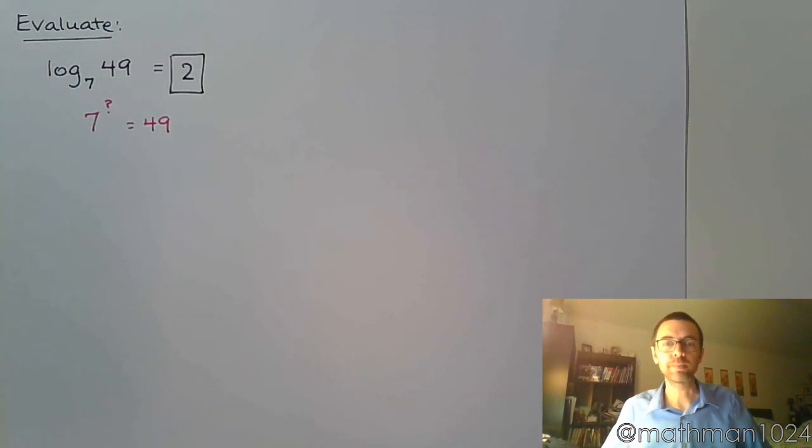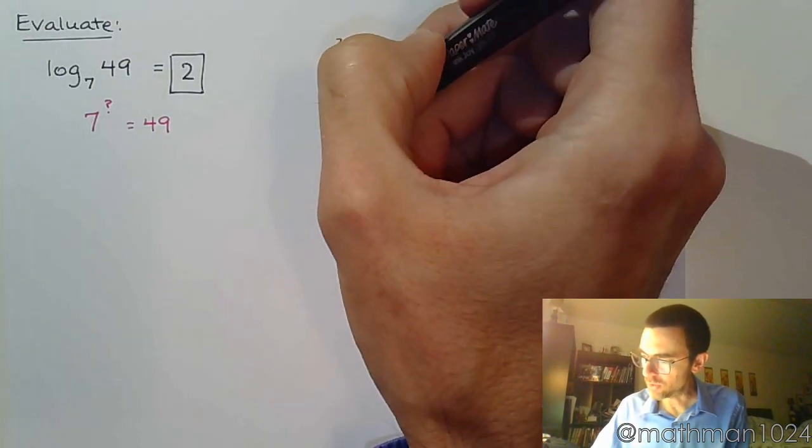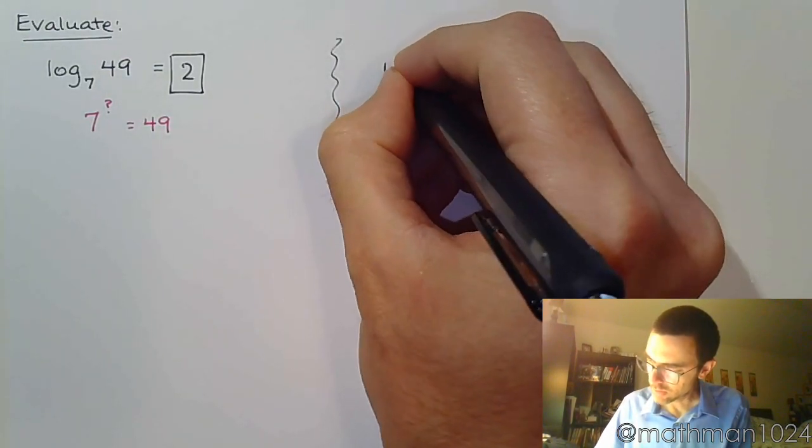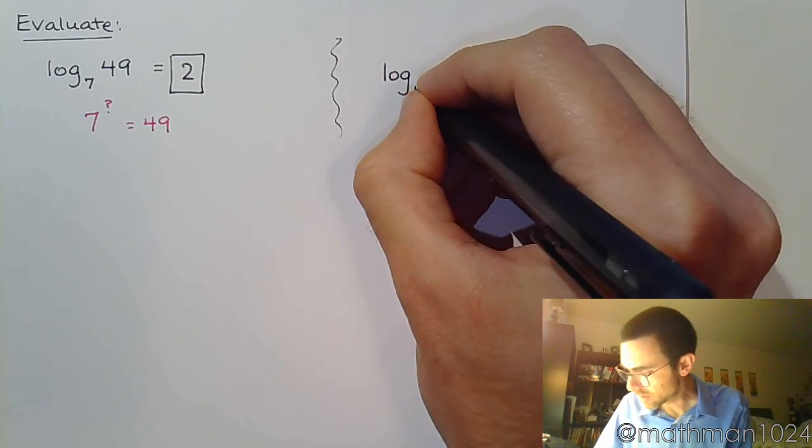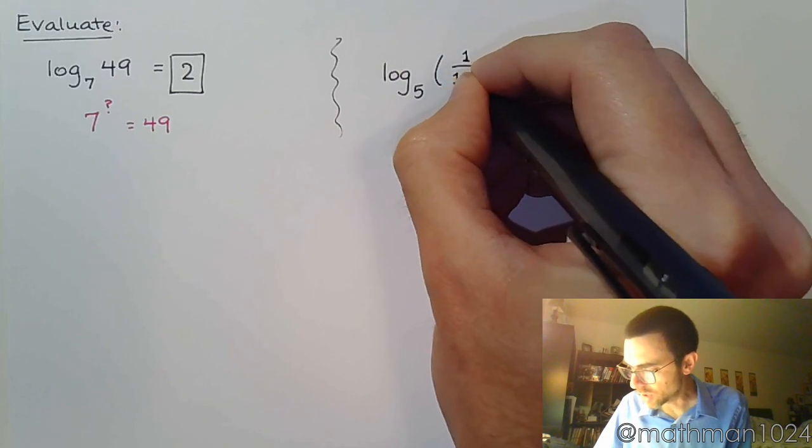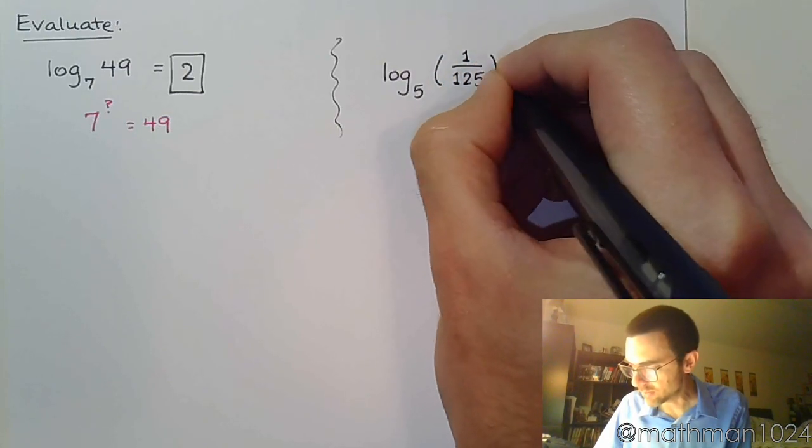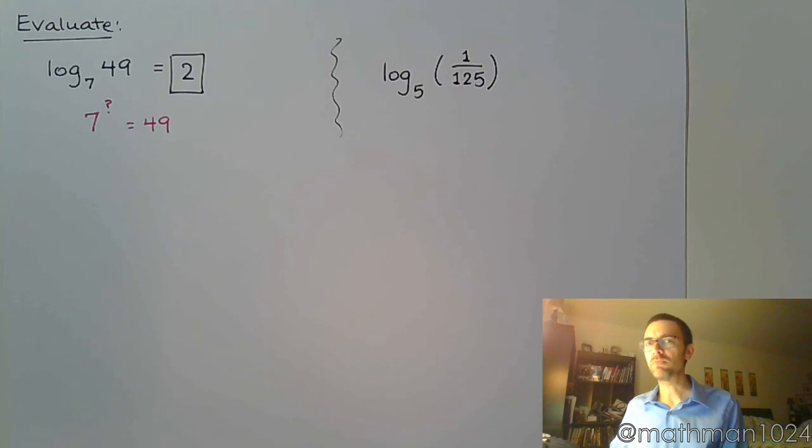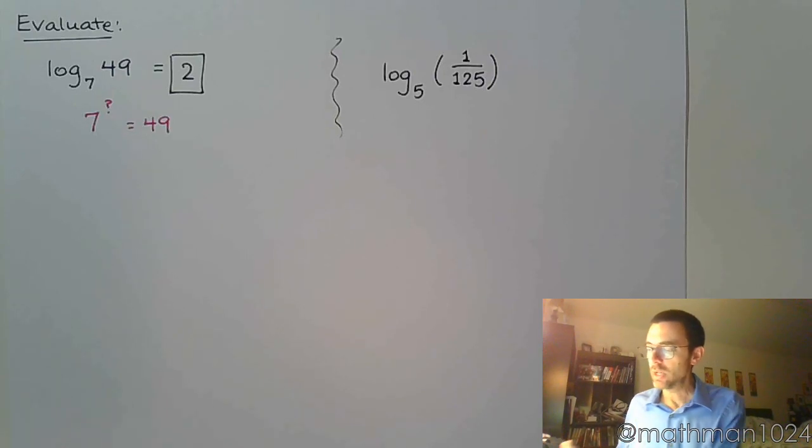That's all there is to it. If I ask you, what is log base 5 of the fraction 1 over 125? Now this may seem kind of difficult or impossible, but it's not. Remember how we said in the last video that we can rewrite these guys as exponential equations, and that might help us. So let's do that.